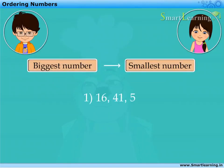Now, observe these numbers. They are 16, 41 and 5. They are not in order. They can be arranged in an order by comparing them.